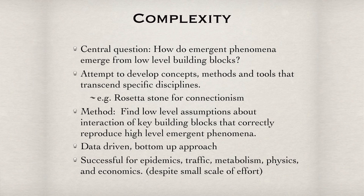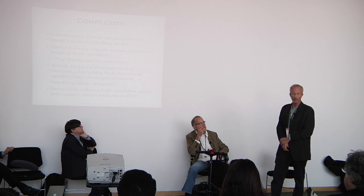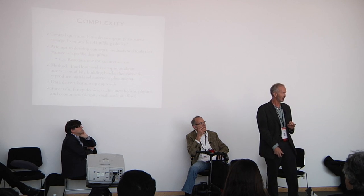The central question in complex systems is how emergent phenomena emerge from low-level building blocks. A second part is that we attempt to build concepts and tools that transcend disciplines. Back in the 90s, I wrote a paper called 'The Rosetta Zone for Connectionism,' where I showed that examples of systems ranging from evolutionary game theory to autocatalytic networks, immune networks, neural nets, and classifier systems in machine learning could all — by just changing the notation — be mapped into a common framework. The method of complex systems is to find low-level assumptions about the interaction of key building blocks that correctly reproduce high-level phenomena.